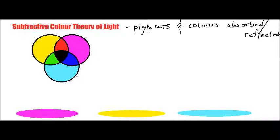Pretty much, what color are you seeing? That's a pigment. So if you think of a paint, that pigment might be red. So why is it that you're seeing red? That's really in essence what we're going to look at with this video. As we mentioned, this is the subtractive color theory of light.